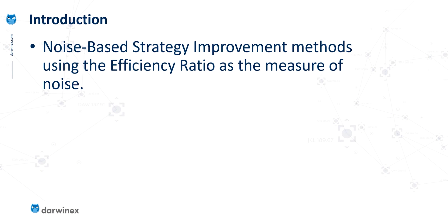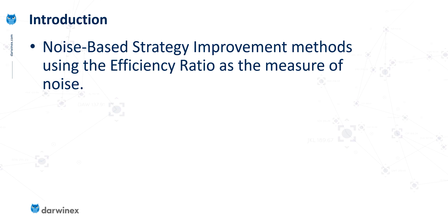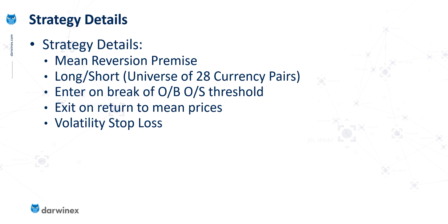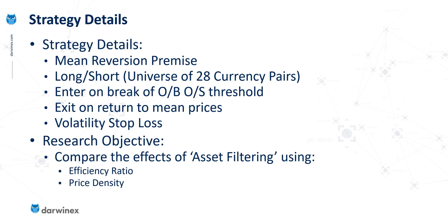So far in the research study that we've been looking at, we've always used the efficiency ratio as the measure for noise. But today is when we start to compare this with the price density measure. To keep things consistent, I'll be using exactly the same strategy that I have before. But because I've explained this in previous episodes, I'm not going to do that again now. The focus this time is to compare directly the effectiveness of the efficiency ratio versus price density when using the asset filtering technique.